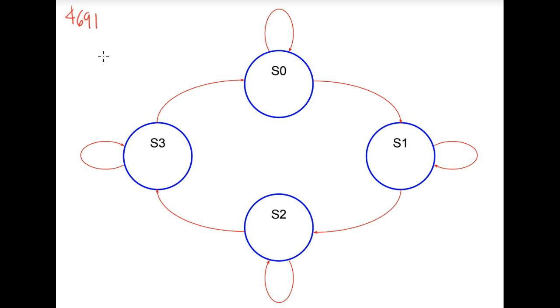So first let's talk about the number of flip-flops that we're going to need. You will always need 2 to the n number of flip-flops. So we have four states: 0, 1, 2, 3.